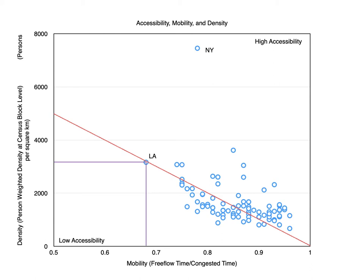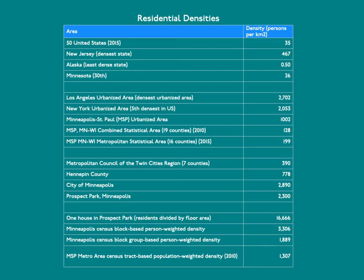Here we illustrate with population density. The density of the United States as a whole averages high-density areas like New York City with low-density areas like Alaska, as shown in Figure 3.3 and Table 3.1. This density is a straightforward calculation, but not exactly how people perceive the world.